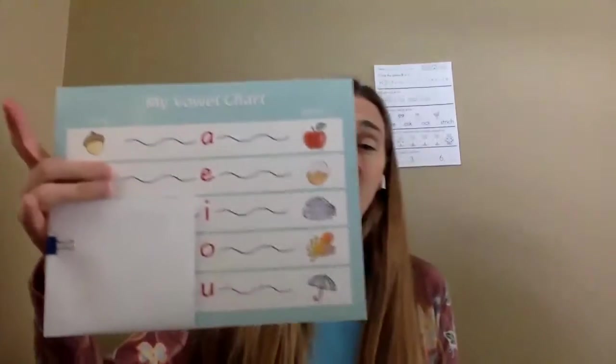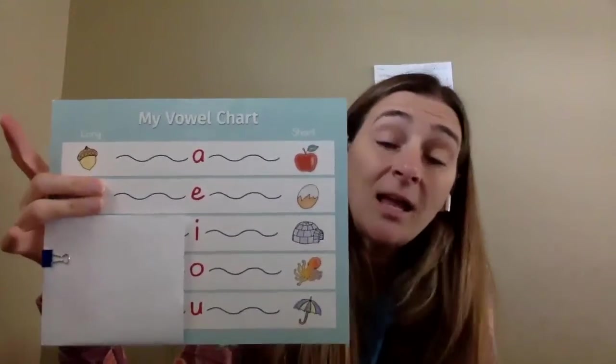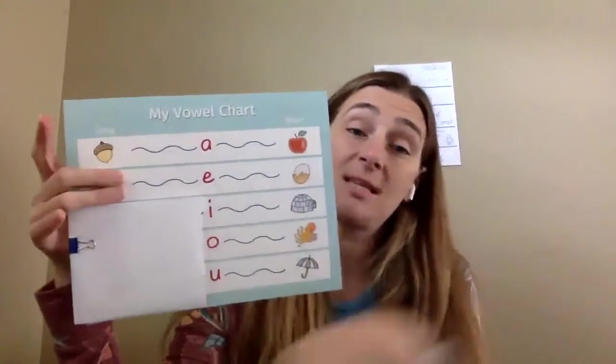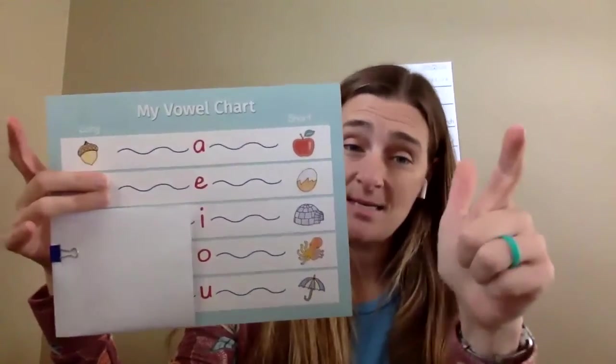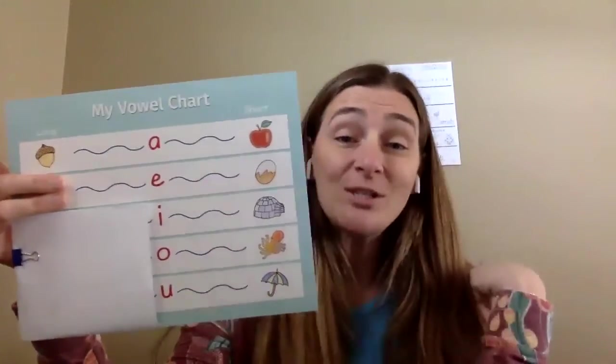So I have my handy dandy vowel chart here and just like earlier I'm going to cover up that second picture for the vowel E. Now we know that we have five vowels. Say them with me. A-E-I-O-U. Good job.